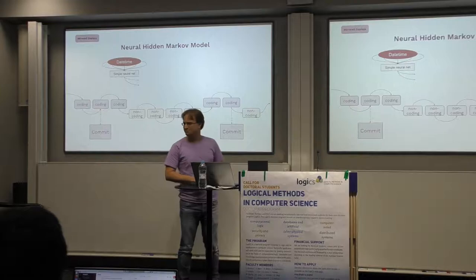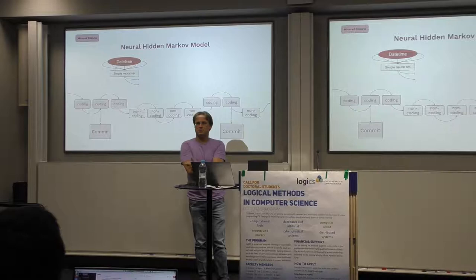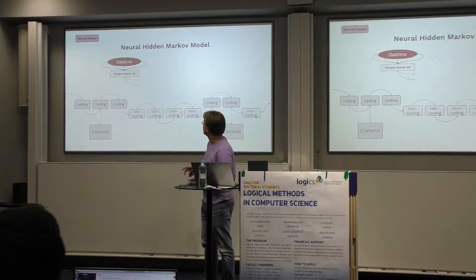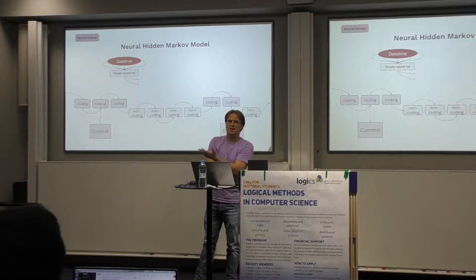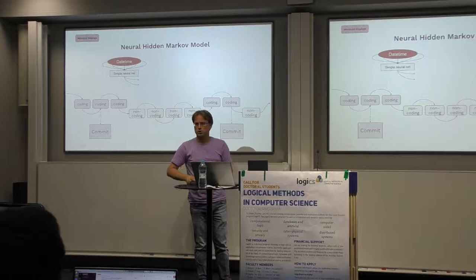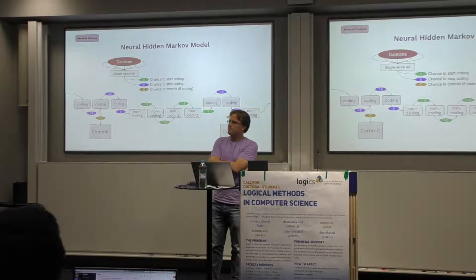Our model is that between two commits, some part of the time is spent coding and some is not. That calls for a hidden Markov model, which models every developer as basically a Markov process that bounces around between those two states with fixed probabilities.